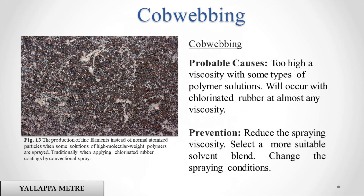Cobwebbing. Probable causes: too high a viscosity with some types of polymer solutions. Will occur with chlorinated rubber at almost any viscosity. Prevention: reduce the spraying viscosity, select a more suitable solvent blend, and change the spraying conditions.